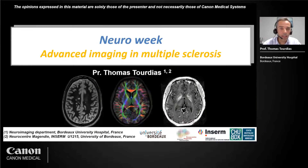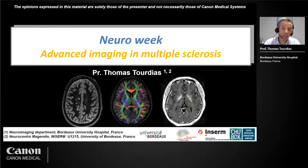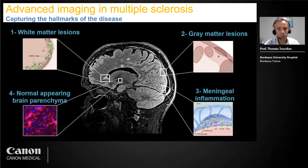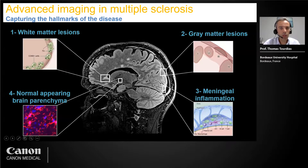Hello everyone. I was asked to discuss the possible added value of some more advanced MRI techniques in MS. This is a broad topic, so I chose to pick a few sequences that are typically not performed in clinical routine, but that could be useful to capture all the hallmarks of MS — not only the white matter, but also gray matter lesions, meningeal inflammation, and diffuse and subtle inflammation.